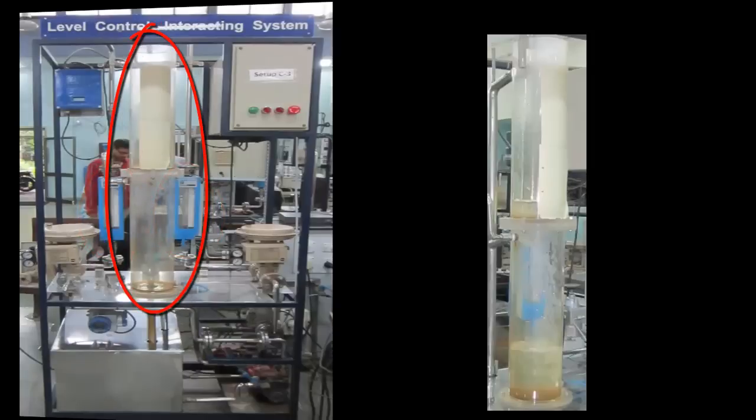The tanks in the non-interacting setup are two long cylinders of 15 cm diameter each and have an orifice constant of 3 x 10^-4 each. These tanks are stacked on top of each other and since any fluctuation in either of the tanks are independent of each other, they are labeled as non-interacting tanks.